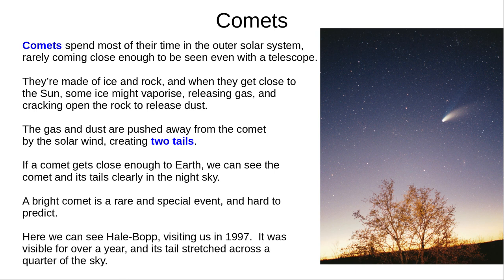Comets are a rare and special sighting. They spend most of their time in the outer solar system, rarely coming close enough to be seen. Comets are mostly ice and rock. When they visit the inner solar system, the ice is heated by the sun, and some might vaporise. This releases gas and also cracks open rock to release dust. The solar wind pushes the gas and dust away from the comet, creating two tails which reflect sunlight. If the comet is close to the Earth, these can be clearly seen, often in the day as well as the night. The best comet in recent years was Hale-Bopp, which in 1997 covered a quarter of the sky with its tails.